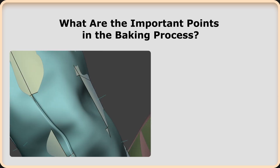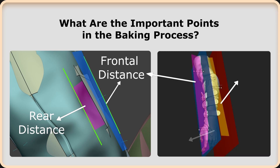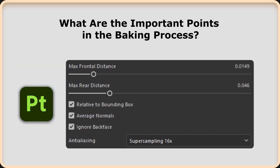While creating the low polygon topology of the model, some surfaces remain inside and some remain outside of the high polygon areas. The high polygon areas under the low polygon are the rear distance, and the high polygon areas outside the low polygon are the frontal distances. Keeping the rear and frontal distances balanced throughout the low poly model will always provide an advantage. In Substance Painter, these distances are controlled with the maximum frontal distance and maximum rear distance parameters. If these distances are balanced, you can perform bake operations without any problems, even with high distance parameters.